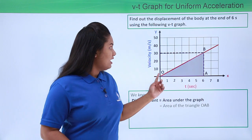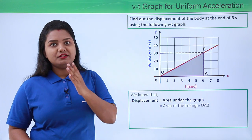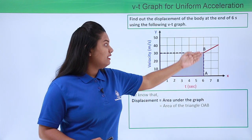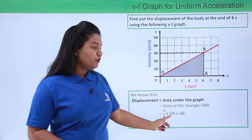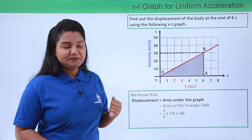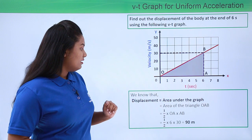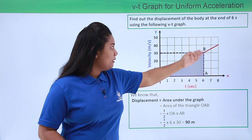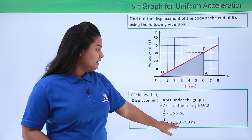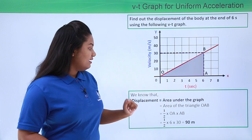This area is equal to the area of triangle OAB. The formula for the area of a triangle is half times base times height. The base is OA and the height is AB. So displacement equals half times OA times AB. From the graph, OA is 6 seconds and AB is 30 meters per second. Putting these values in: half times 6 times 30 equals 90 meters. The displacement at the end of 6 seconds is 90 meters.